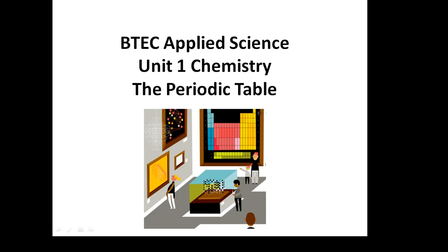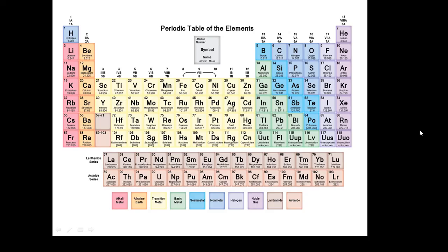BTEC Applied Science Unit 1 Chemistry: The Periodic Table. Now this is the periodic table of the elements. If you see it like this, it looks pretty frightening. There's an awful lot to it.